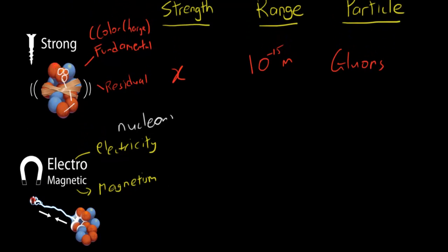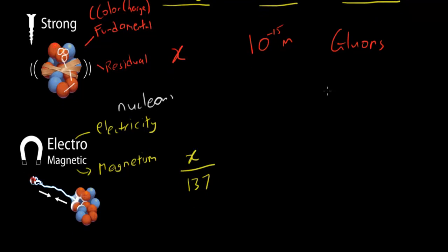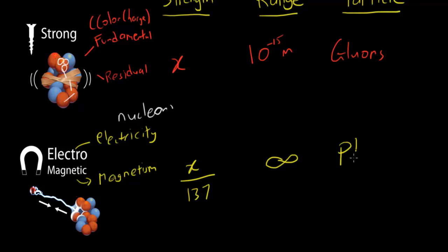The strength of the electromagnetic force relative to the strong force is about x over 10 to the 37th. The range of the electromagnetic force is actually infinite. And the particle that mediates this force is the photon. One quick disclaimer: the photon here is not the photon of light you normally talk about — it's actually a virtual particle, bound by the uncertainty principle, and I'll dedicate a whole lesson to that.